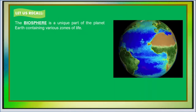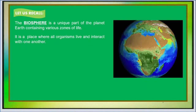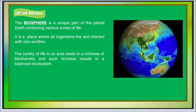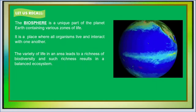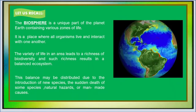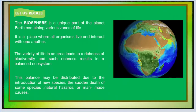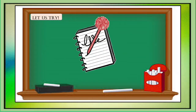Before we go to our main topic, let us have first a recall. Remember, class, that the biosphere is the unique part of planet Earth containing various zones of life — it is a place where all organisms live and interact with one another. The variety of life in an area leads to a richness of biodiversity, and such richness results in a balanced ecosystem. This balance may be disturbed due to the introduction of new species, the sudden death of some species, natural hazards, or man-made causes. We will now find out how much you already know about biodiversity and the causes of species extinction.